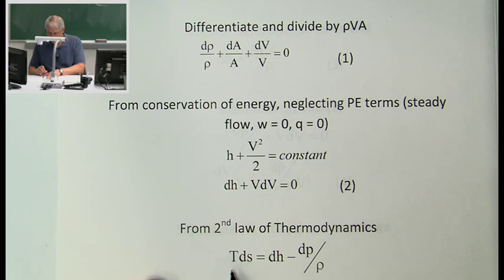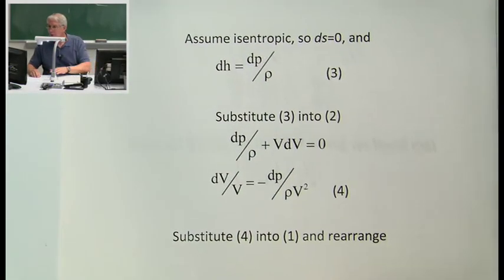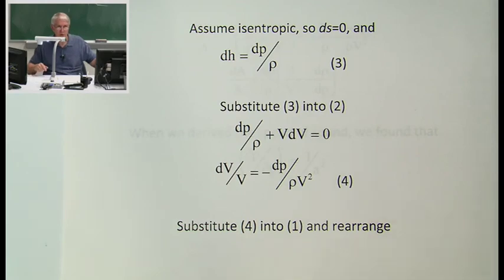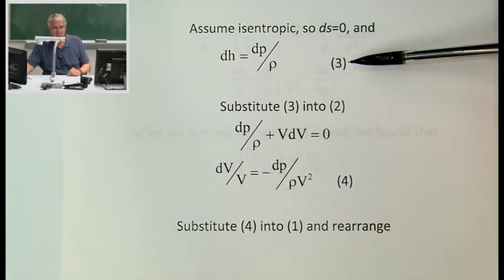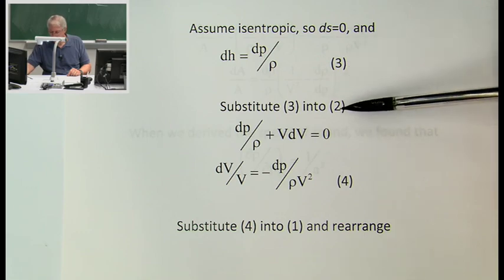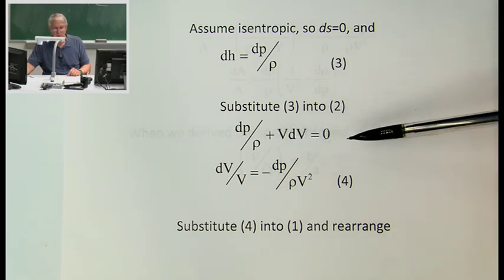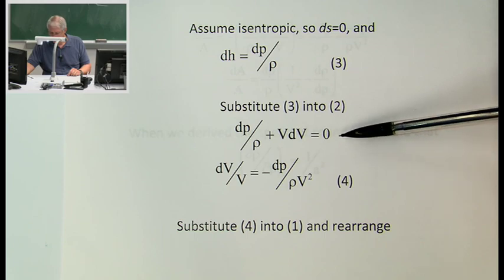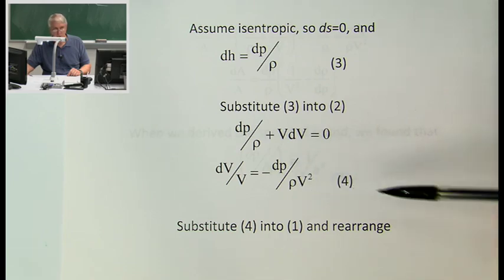From the second law of thermodynamics: T·dS = dH − dP/ρ. Assuming isentropic flow, dS = 0, so dH = dP/ρ — call that equation three. Substituting equation three into two: dP/ρ + V·dV = 0. Rearranging: dV/V = −dP/(ρV²). Call that equation four.